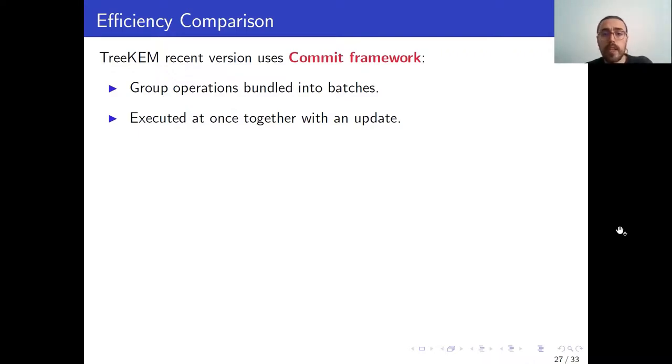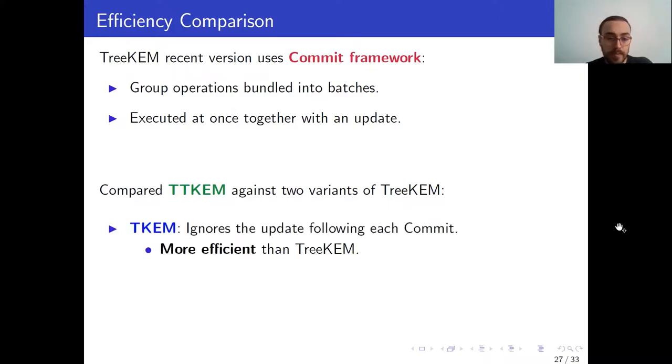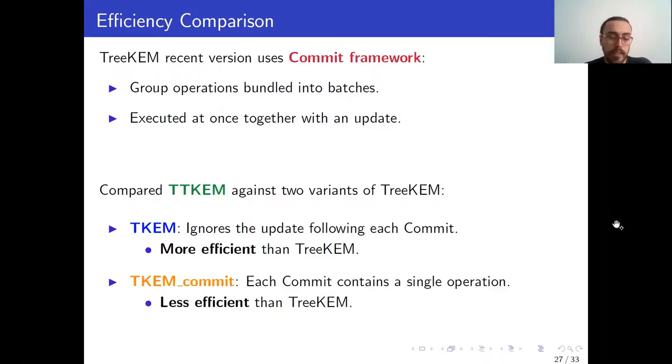So our protocol, Tainted TreeKEM, does not do this, and instead executes operations one by one. So what we did is we compared Tainted TreeKEM against two dummy variants of TreeKEM, against which this comparison is easier. The first one, TreeKEM, in blue in the graphs in the following slides, ignores the update flow in each commit. So of course it will be more efficient than TreeKEM, since we are ignoring this extra work incurred by every commit. The second one, TreeKEM commit, restricts each commit to contain a single operation. So of course it will be less efficient than TreeKEM, since it cannot take advantage of, for example, bundling together several removes.